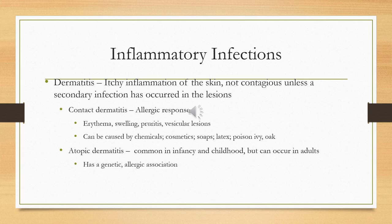With contact dermatitis, you might see erythema — which is redness — swelling, pruritus, which is itching, or some type of vesicular lesions. Another type is atopic dermatitis, which is a chronic relapsing inflammatory disorder that usually begins in infancy but can occur in adults as well. It can be associated with allergic reactions and tends to be genetic in nature.